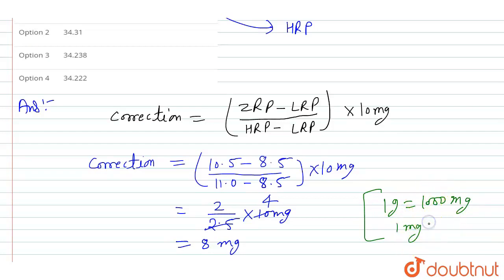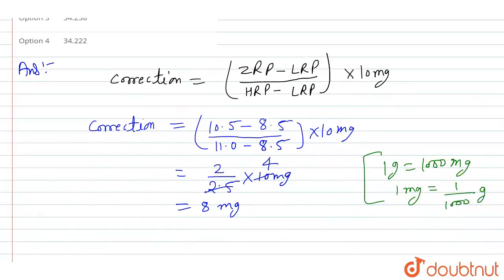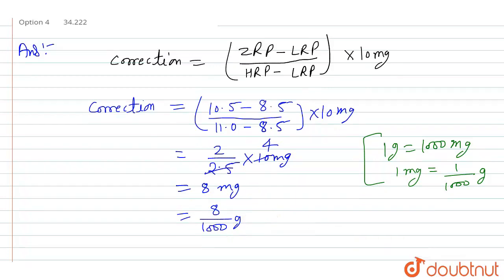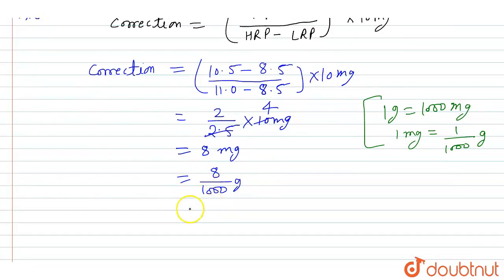One milligram is one by one thousand grams. So the correction is 8 divided by one thousand grams, which gives us zero point zero zero eight grams.